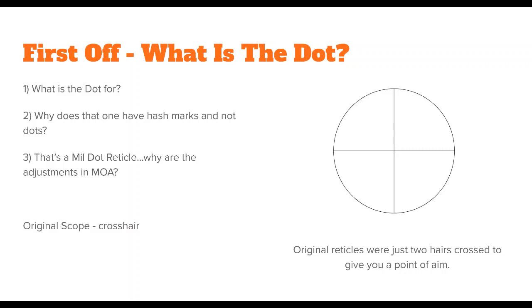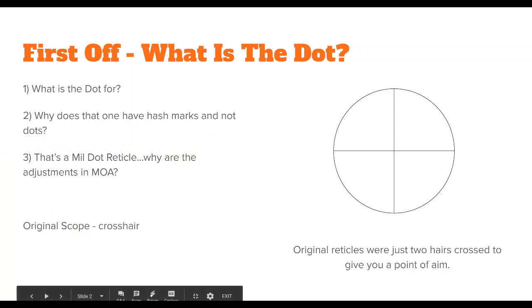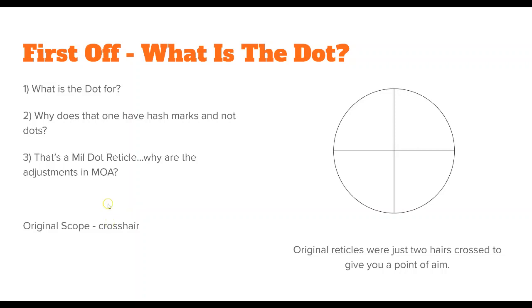My favorite question is: okay, so that's a mil-dot reticle but those turret adjustments are in MOA — what's the deal with that? That one was especially confusing for me. I don't recommend this for new shooters — having adjustments in MOA but a mil-dot reticle. If you're experienced, do whatever you're comfortable with. But if you're just starting out, I would not suggest getting a scope that has adjustments in MOA with a mil reticle. Just keep them the same — it's going to be a lot easier.